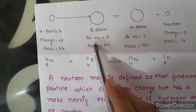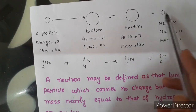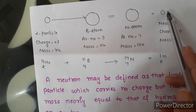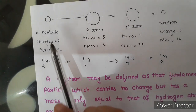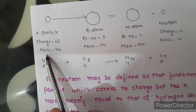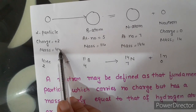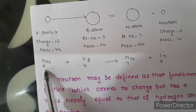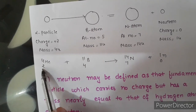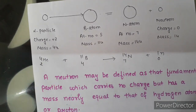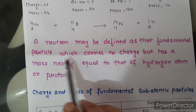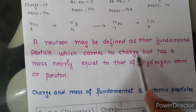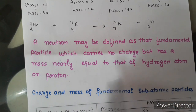Similarly, when alpha particles strike boron or nitrogen, new particles are produced having no charge — these are also known as neutrons. Alpha particles carry a charge of +2 and mass of 4 on the unified scale; they can also be called helium particles since the atomic number of helium is 2 and atomic mass is 4. We can define neutron as the fundamental particle which carries no charge but has a mass nearly equal to that of the hydrogen atom or proton.